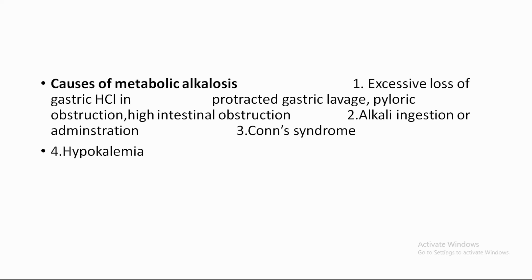When bicarbonate reabsorption from the proximal convoluted tubule is inhibited, bicarbonate is excreted in the urine, making the urine alkaline. So in metabolic alkalosis, the correction rate involves inhibited bicarbonate absorption at the proximal convoluted tubule, plus alkaline urine excretion.